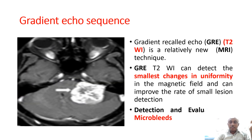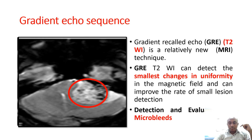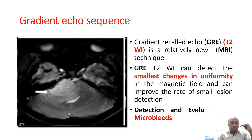Gradient Echo sequence is another sequence that can detect microbleeds. In schwannomas, there will be microbleeds, and CP angle tumors are often confused with meningiomas. If there is a microbleed visible, these microbleeds are characteristic of schwannomas. In meningiomas, there is no bleed. So microbleed indicates schwannoma; no bleed indicates meningioma. This is called GRE sequence.